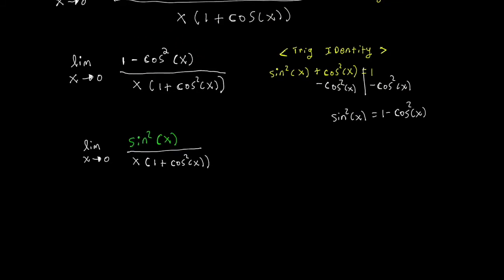Making my exchange, I am now going to rewrite my new expression in this way. I'm going to write it as the limit as x approaches 0 of sine of x all over x times my other sine of x all over 1 plus cosine squared of x.